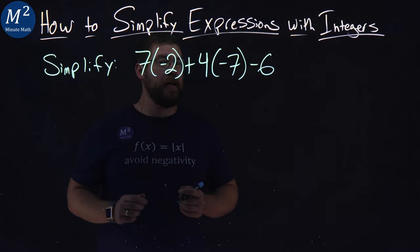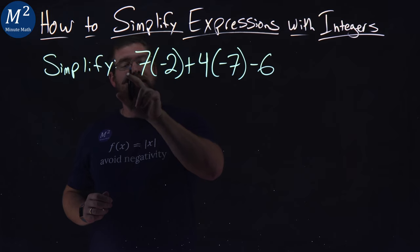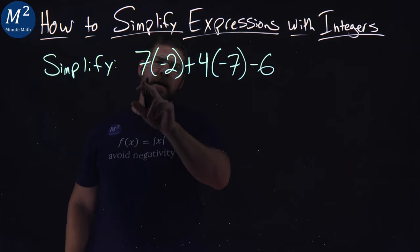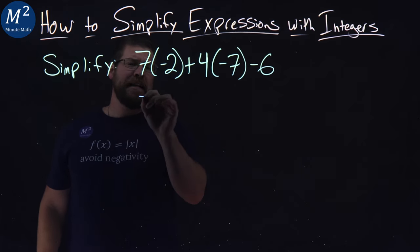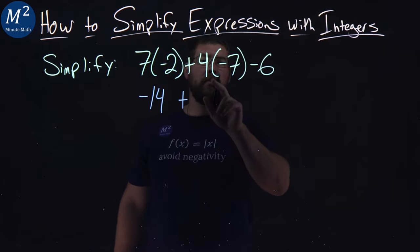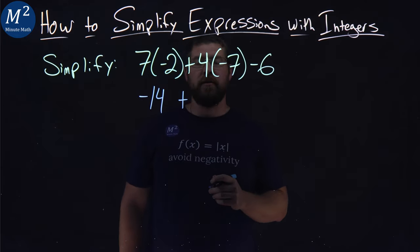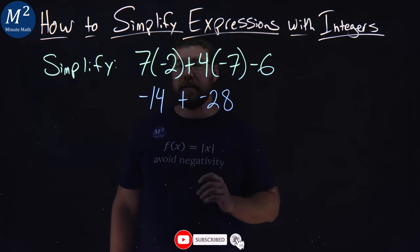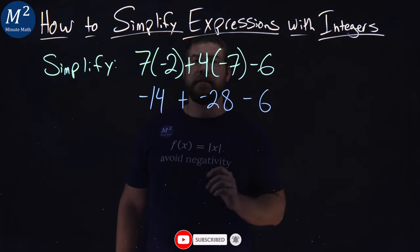7 times negative 2. Remember, parentheses with a number outside means multiplication. 7 times negative 2 is negative 14. Plus, we'll do 4 times negative 7 here now. And that's negative 28. And then we'll be minus 6.